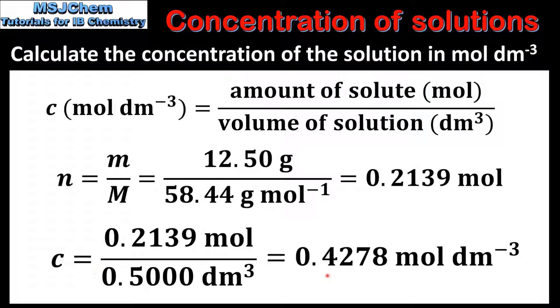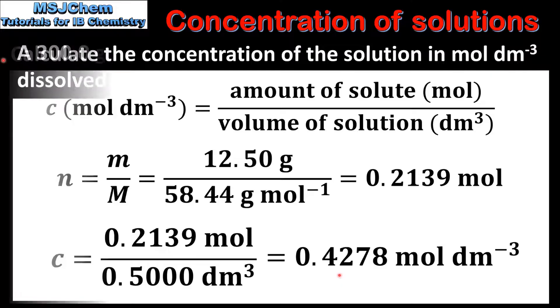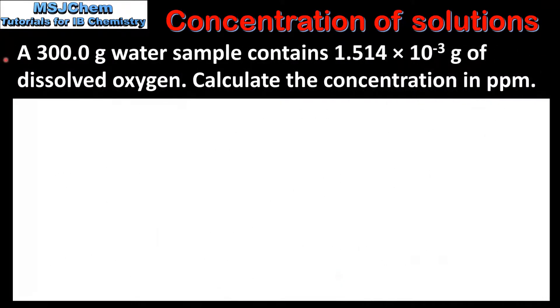Dividing the amount in moles by the volume in cubic decimeters gives us a concentration of 0.4278 moles per cubic decimeter. In the last example we will calculate concentration in ppm, which is parts per million.